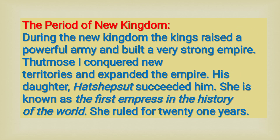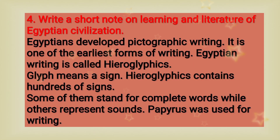The period of new kingdom: During this period, kings raised a powerful army and built a very strong empire. Thutmose I conquered new territories and expanded the empire. Thutmose I is considered the greatest ruler of Egyptian civilization. His daughter Hatshepsut succeeded him and is known as the first empress in the history of the world. She ruled for 21 years.